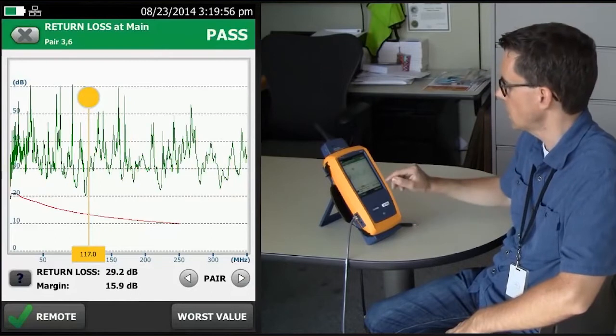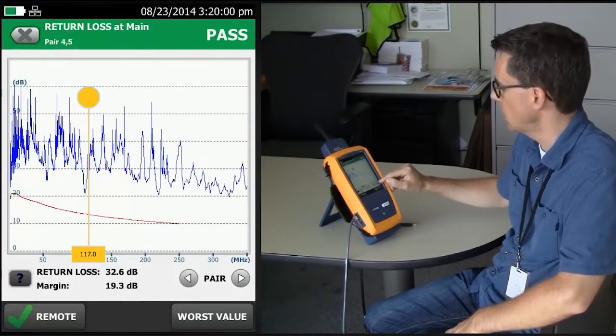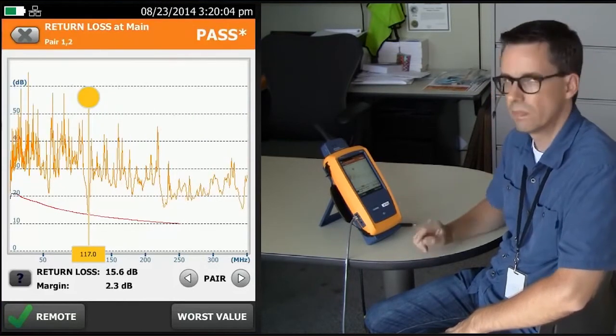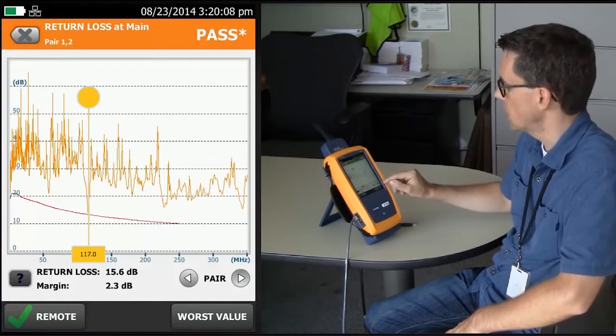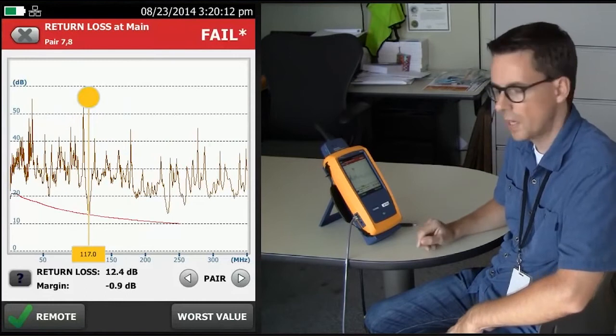If we go and look at our other pairs, like 3-6, we've got good margin. 4-5 is good margin, but also 1-2 barely passes. But like I said, we'll focus on just our 7-8 at the moment, the failing pair.